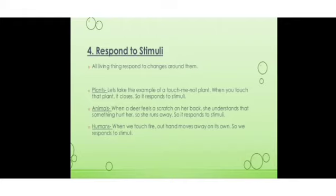Responding to stimuli is another characteristic. We all have sense organs — there are five sense organs: eyes, ears, nose, tongue, and skin. All the sense organs are sensitive to different types of stimuli. Eyes respond to light, ears respond to sound, nose responds to smell, tongue responds to different types of taste, and skin responds to touch — it can be pain, cold, hot, etc.